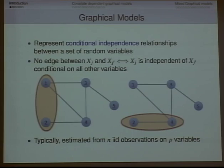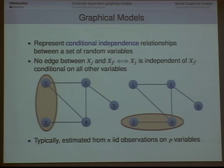Typically we don't know what this graph is, and we're trying to estimate it from n observations on p variables. Of course p could be large, n could also be large. Just to emphasize from the beginning, this is not a prediction problem. Unlike regression, this is basically exploratory data analysis — we're trying to see what relationships there are in the data, find interesting edges, and there's no prediction error we can use to evaluate this.